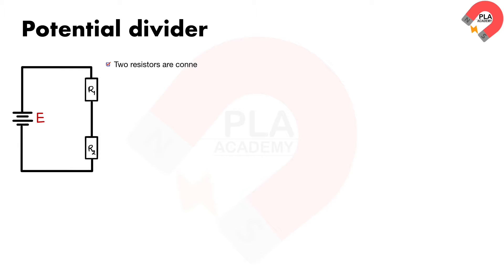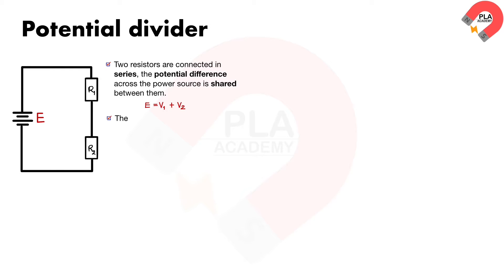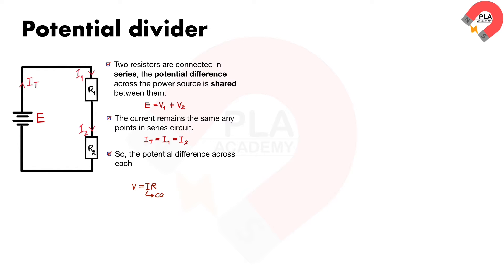Potential dividers: when two resistors are connected in series, the potential difference across the circuit is shared between them. The current remains the same at any point in a series circuit, so the current from the power supply is equal to the current through R1 and R2. The potential difference across each resistor is proportional to its resistance, and the resistor with the largest resistance will have a greater potential difference than the other.